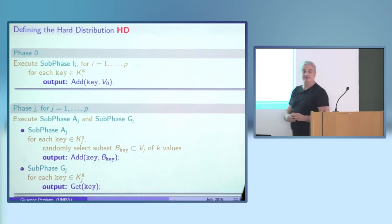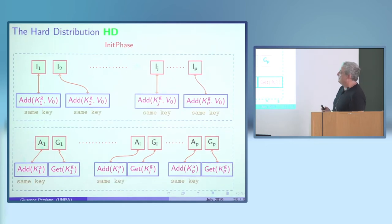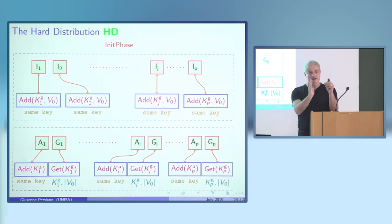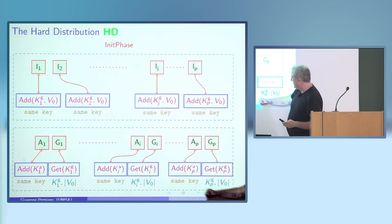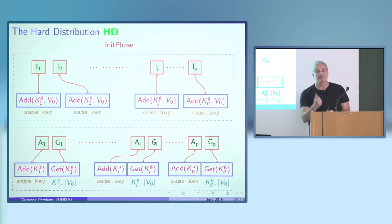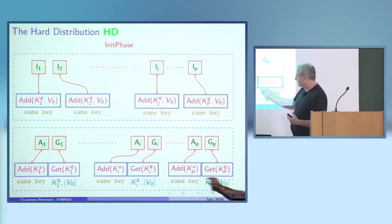This is the hard distribution, and its leakage has a specific structure: for the add operations, the server sees same-key groups in each phase; for the get operations, I'm leaking the actual key plus the response size and the operation type — encoded by the structure of the distribution. The leakage of the hard distribution is thus well-defined.